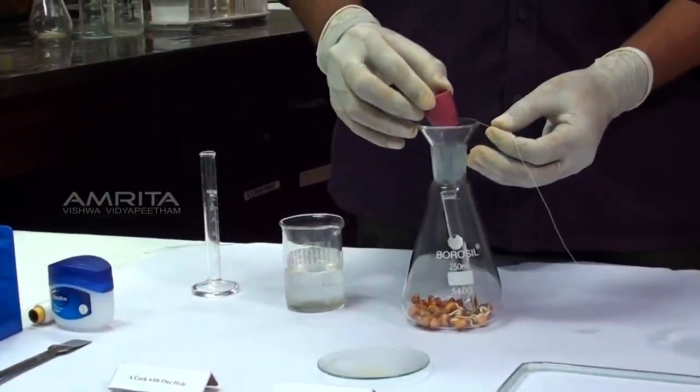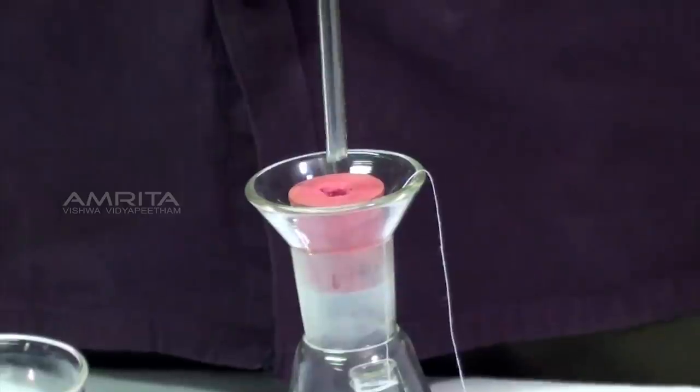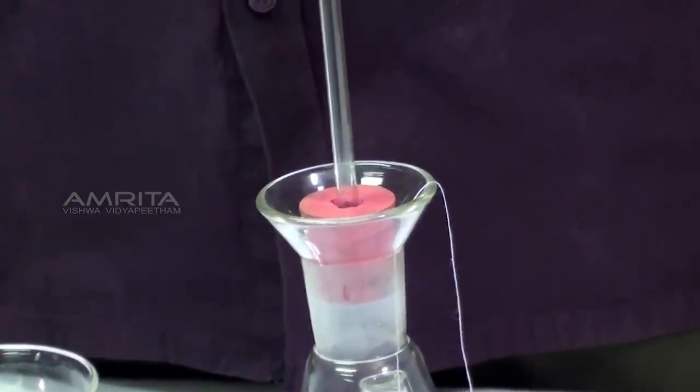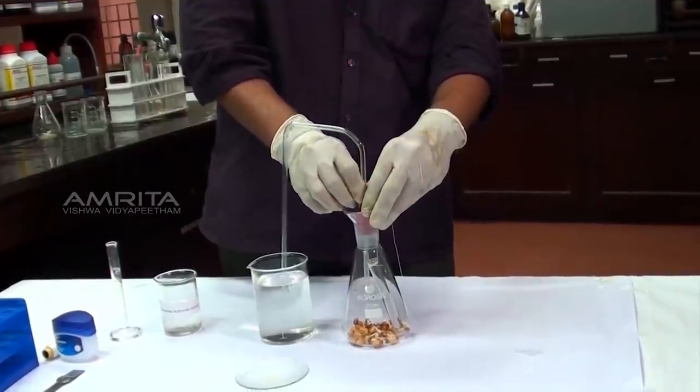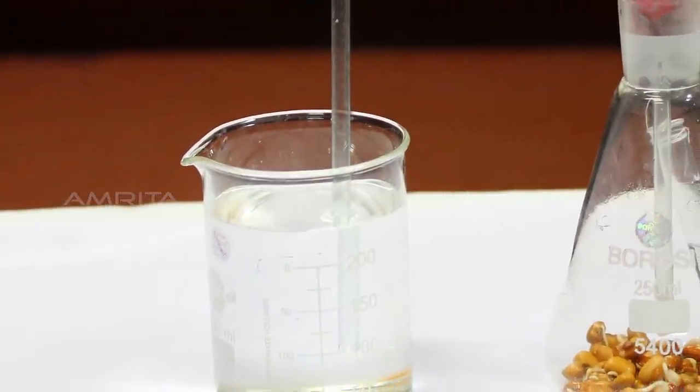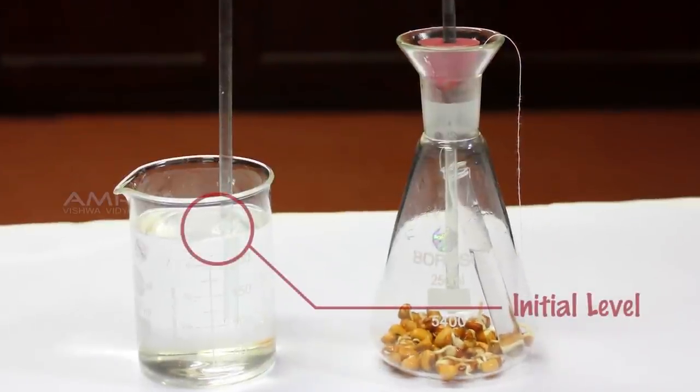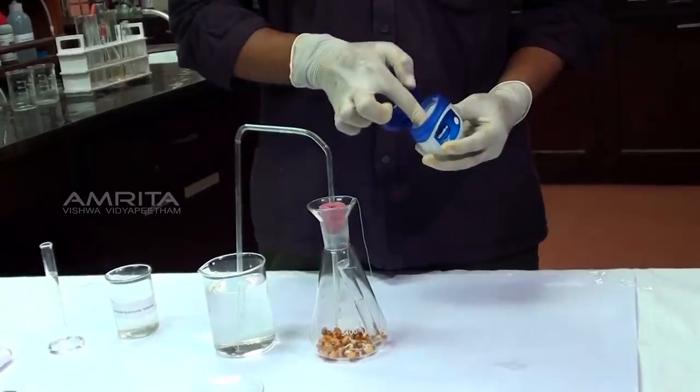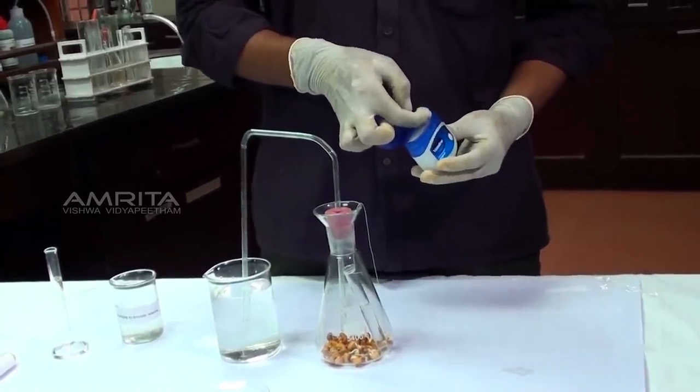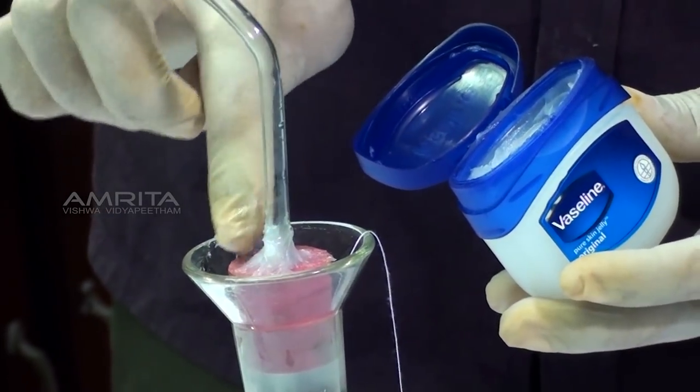Close the mouth of the conical flask with a cork. Insert one end of the delivery tube into the conical flask through the cork and dip the other in a beaker containing water. Observe the position of the water level in the delivery tube. This is the initial reading of the water level in the delivery tube. Use your finger to take some petroleum jelly, then apply the petroleum jelly on the cork to make the apparatus air tight.